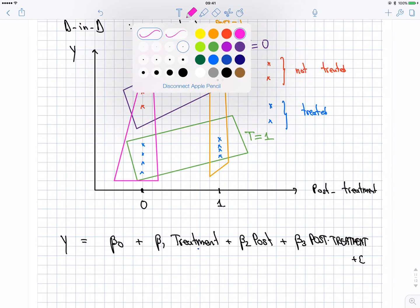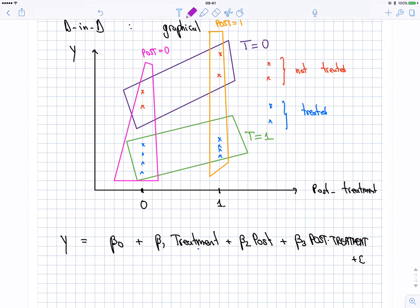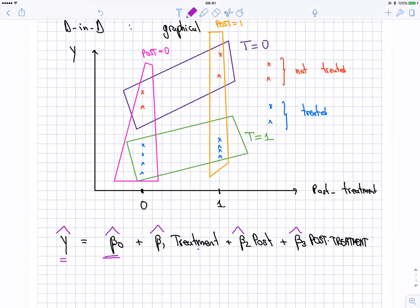Look, how do I find... Let's go now to the estimated model. So I put hats on top of this. Hat, hat, hat, hat, hat. If I'm looking at the estimated model, I delete the error term because it's the estimated model. Where will beta zero be? Well, beta zero is simply the average of the y for the non-treated group prior to the treatment. The average of the non-treated group prior to the treatment is here. This height here is going to be beta zero hat.